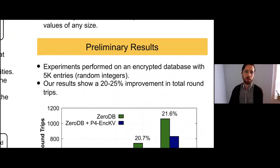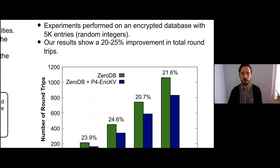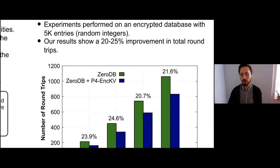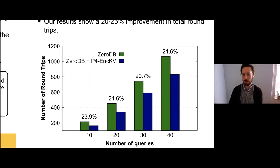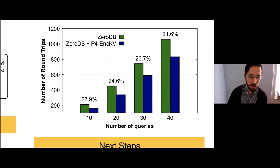For our preliminary results, we investigated the round trip time reduction we can gain from this. We filled an encrypted CRDV database with 5,000 random entries and ran a series of queries on it. Our results showed around a quarter of the round trips we reduced, and this is just by caching the top layers of that B-tree. So a pretty good performance increase, especially if we have high latency links potentially.